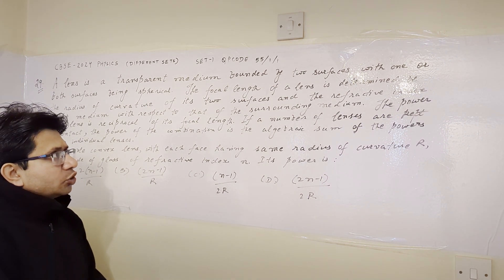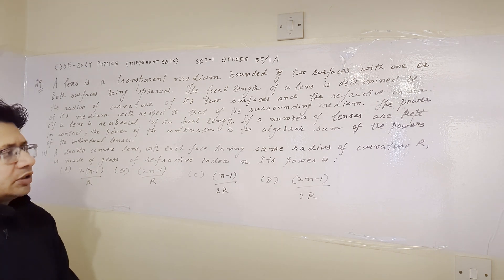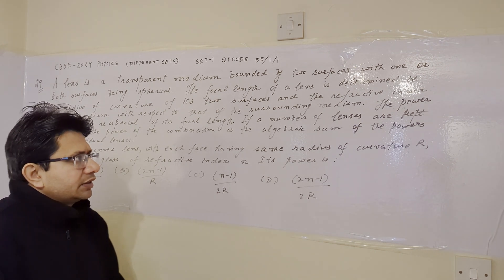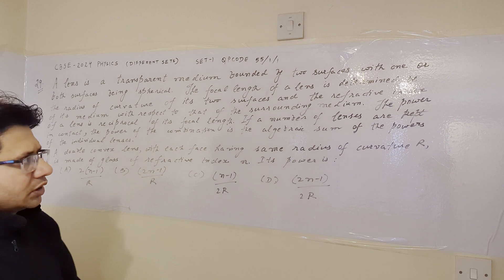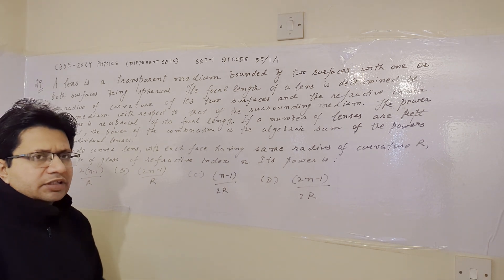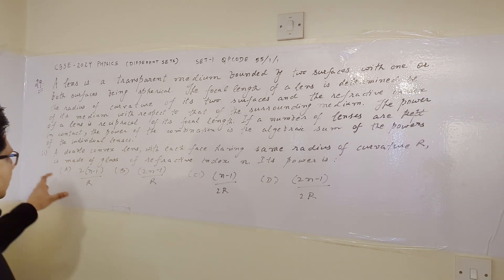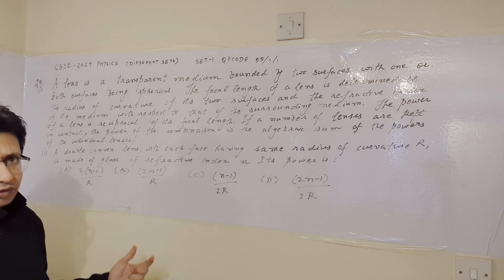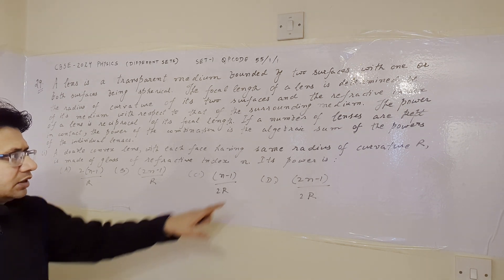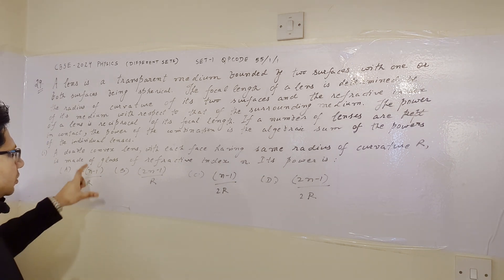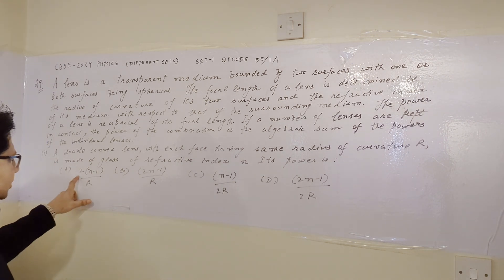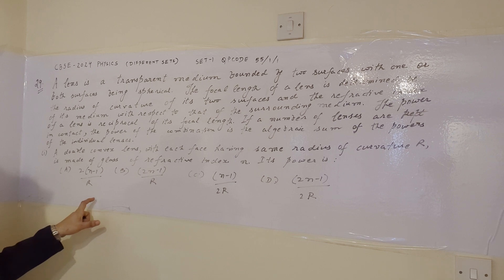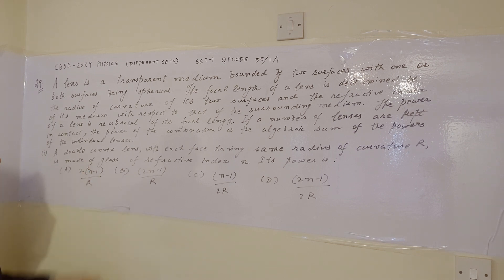This problem is based on the topic of lenses, in particular the combination of lenses, and how power and different parameters of lenses are related. Power is the reciprocal of focal length, and we need the relationship between power, refractive index N, and radius of curvature R. For a double convex lens, power is given by 2(N-1)/R. So option A — 2(N-1)/R — is correct. We have to remember this relationship for a double convex lens.